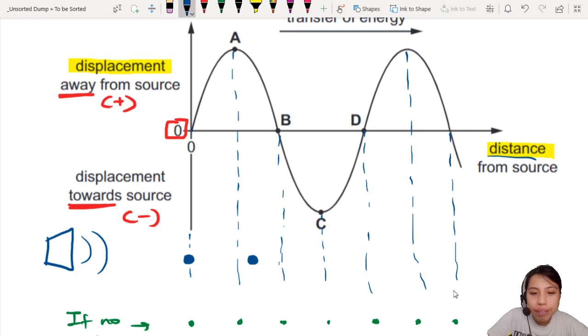Then you have particle B right in the middle. Particle C is negative now, towards the source. So something like this. Particle D right at the middle.